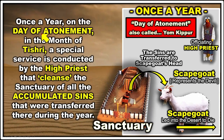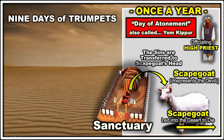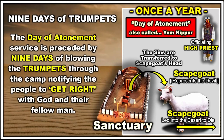Once a year on the Day of Atonement in the month of Tishri, a special service is conducted by the high priest to cleanse the sanctuary of the accumulated sins transferred into the sanctuary during the year. The Day of Atonement is preceded by nine days of blowing the trumpets throughout the camp — done by many priests — which would notify the people to get right with God and their fellow men: ask forgiveness from one another and ask forgiveness from God.